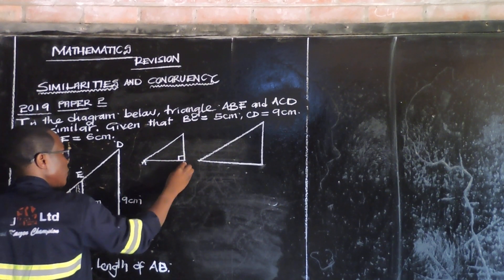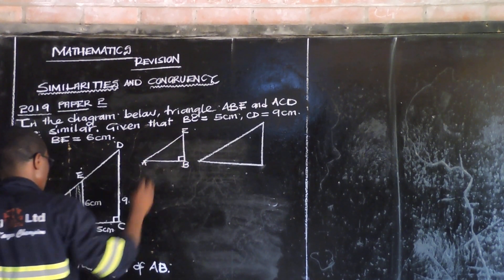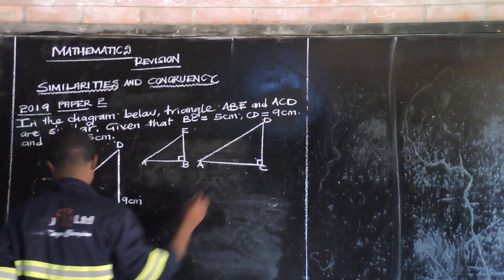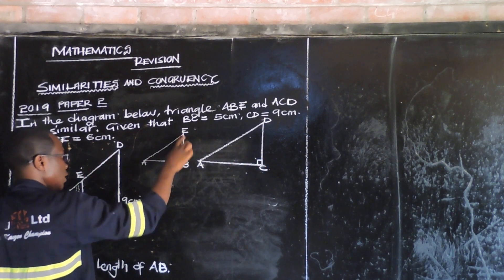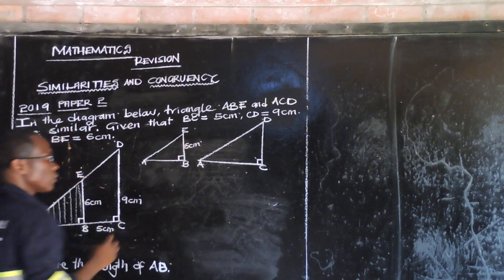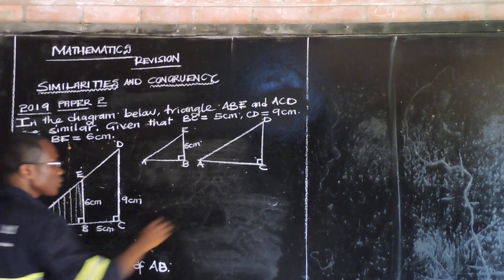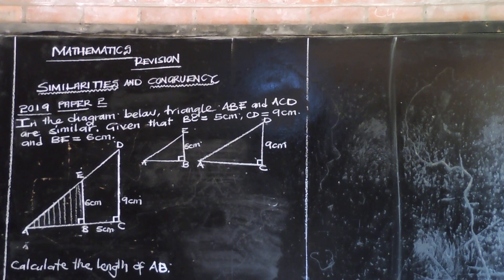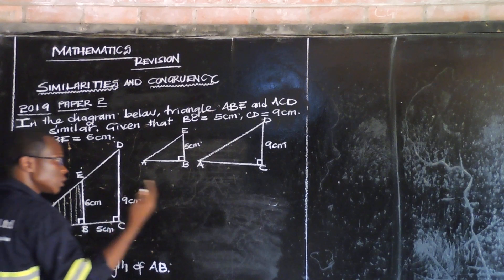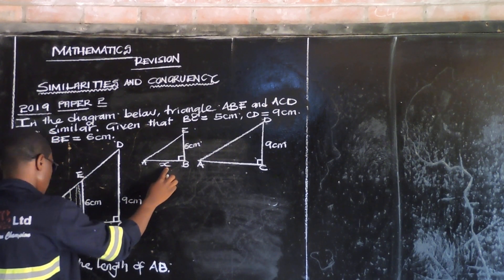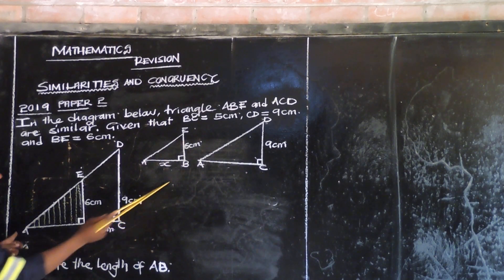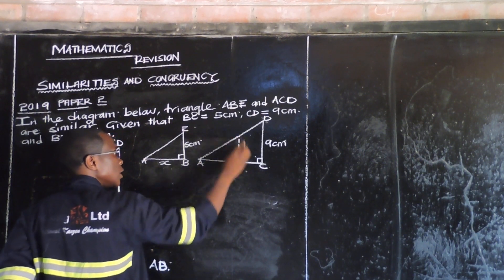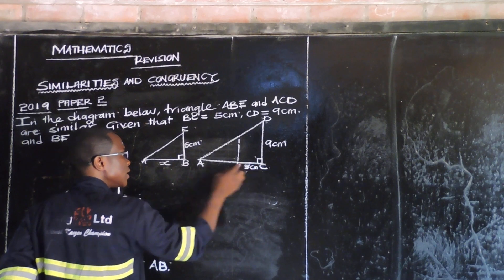So our small triangle has vertices A, B, and E. Our big triangle has vertices A, C, and D. Are we together? In our small triangle, BE is 6cm. In our big triangle, CD is 9cm.